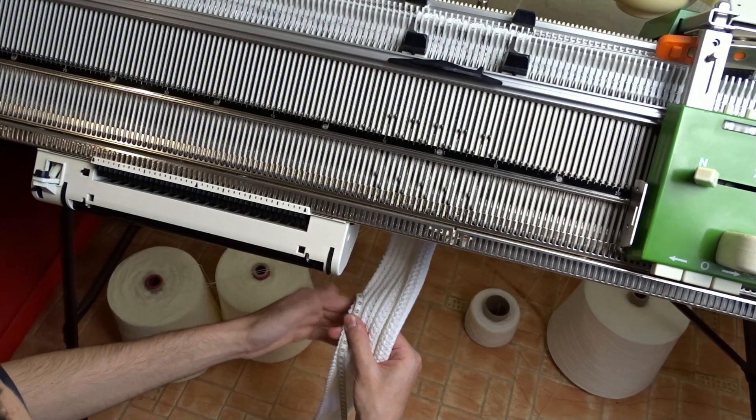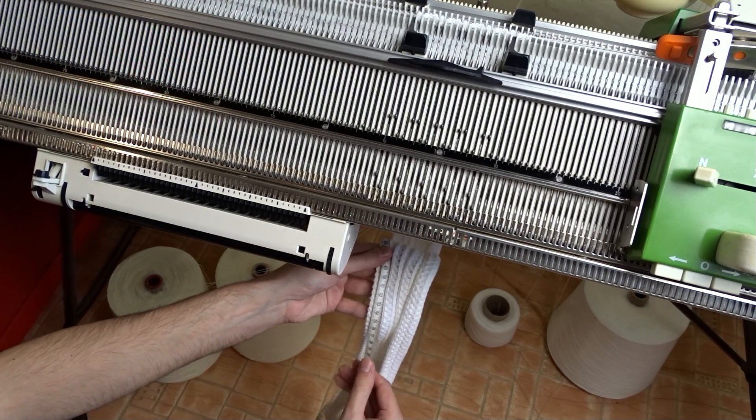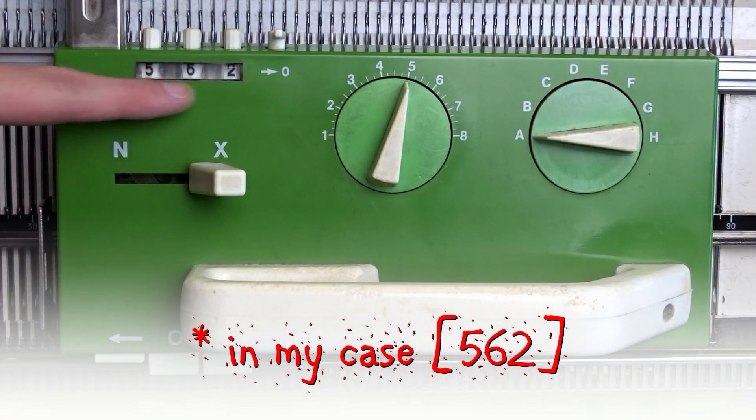You can roughly measure the strip by holding a measuring tape between the beds. The strip will touch the floor when it is about the right length.